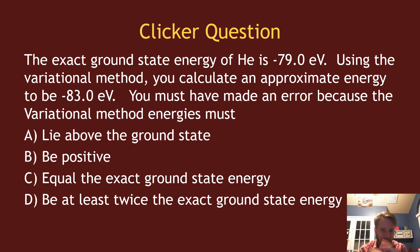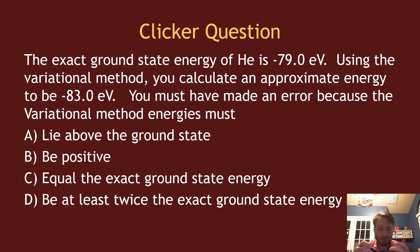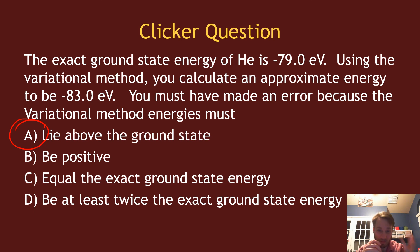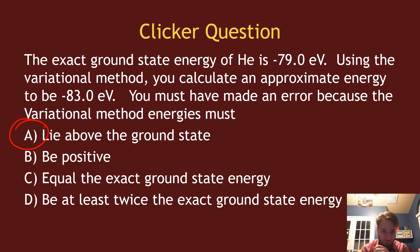The exact energy for helium is −79 eV. Using the variation method you get an approximate energy of −83 eV. You know you must have made an error because variational method energies must always lie above the ground state or equal the exact ground state energy. Since −83 eV is less than the true ground state energy, the calculation cannot be correct.